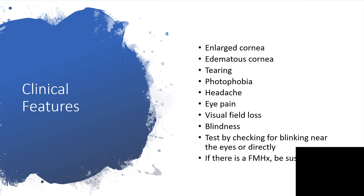What are the clinical features? When the cornea is viewed it's going to be enlarged. The child could be tearing more profusely and afraid of looking at light — photophobia. There may be complaints of headache in adolescents or young adults, since infants cannot articulate that. Other symptoms include eye pain and visual field loss.